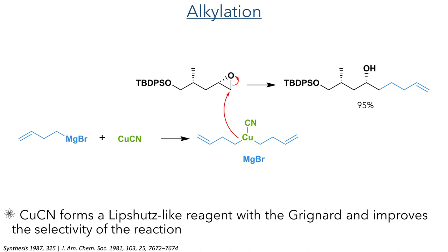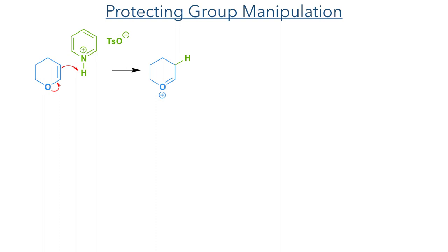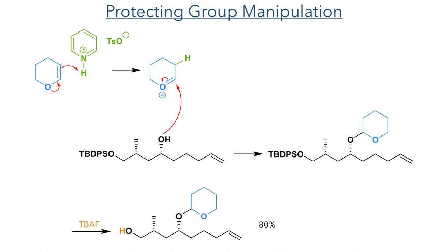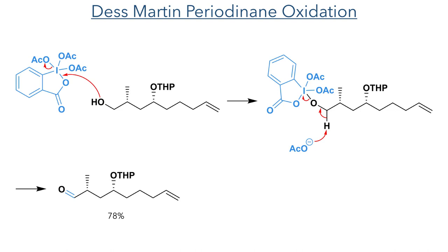The resulting alcohol was then protected as a THP group. Dihydropyran is first protonated by PPTS, which forms an oxocarbenium intermediate that is then attacked by the alcohol. To this reaction mixture, TBAF was then added to cleave the silyl group protecting the primary alcohol. This was done to allow it to react with Dess-Martin periodinane, which is attacked by the alcohol and eliminates an acetate. This acetate then acts as a base and deprotonates the activated centre, producing the target aldehyde in a 78% yield.